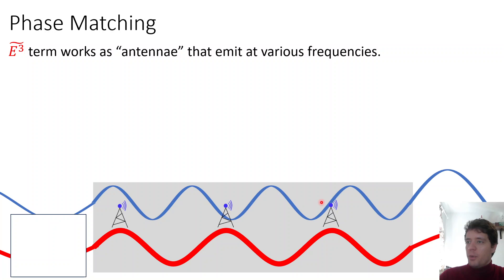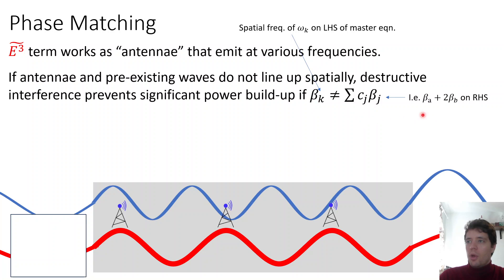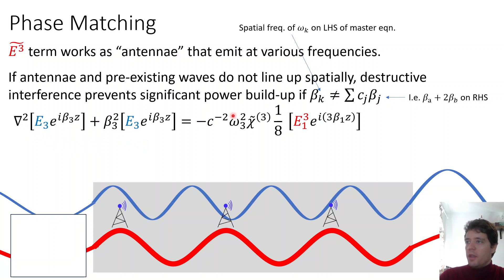For the emitted wave to have a large amplitude at the end of the medium, the wave propagating through must have a spatial frequency well matched to the spatial frequency of the antennae — essentially constructive interference. If there's not a perfect match between the spatial frequency of the antennae riding on the red omega 1 wave and the blue wave, you won't get a perfect buildup of power. Mathematically, a frequency on the left-hand side of the master equation must have its spatial frequency match up with one of the terms in the E-cubed expansion.